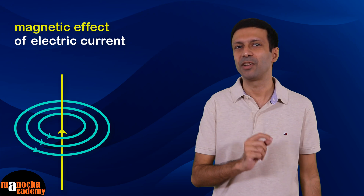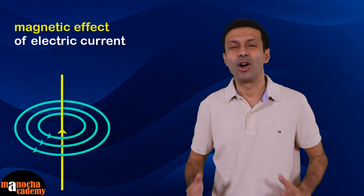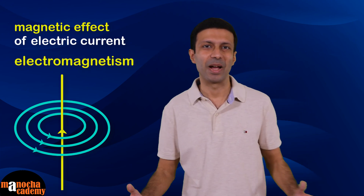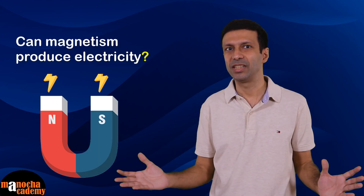Hi friends, as we discussed in an earlier video, a current-carrying wire produces a magnetic field around it. This is called the magnetic effect of electric current, or electromagnetism. So electricity produces magnetism — but is the reverse also true? Can magnetism produce electricity?